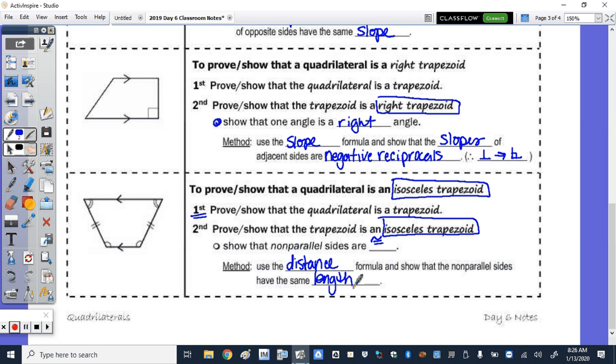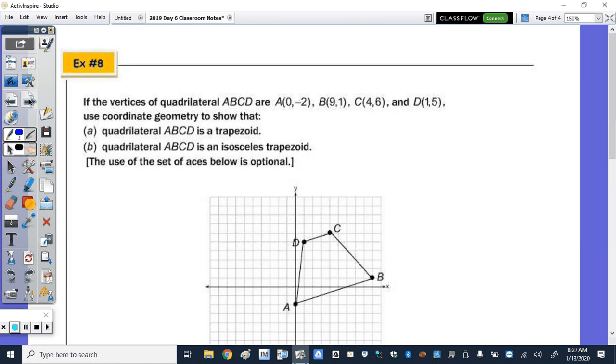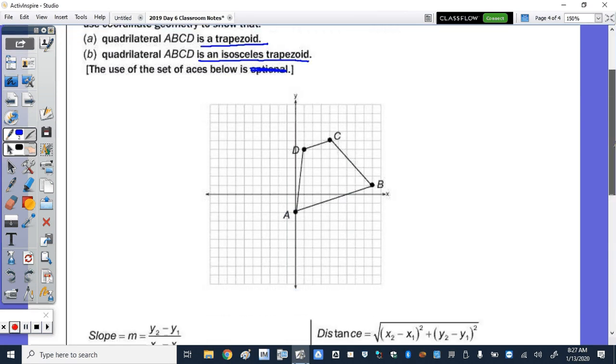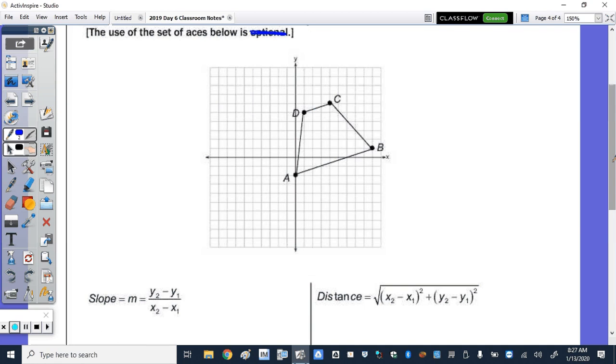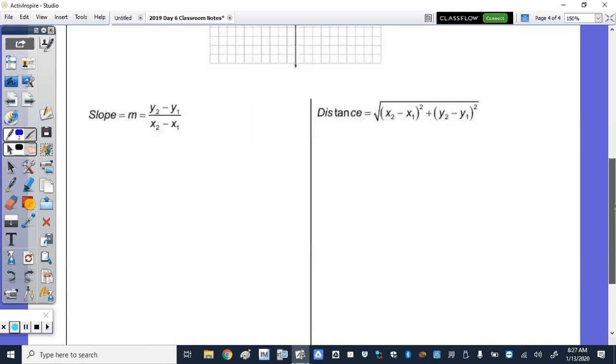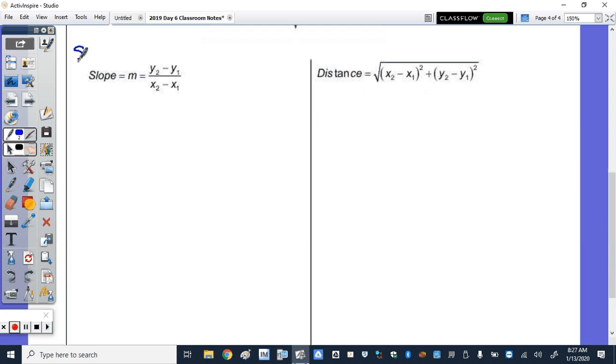So let's do the coordinate geometry proof. So we're given the vertices and we want to show that first it is a trapezoid and then second it's an isosceles trapezoid. And remember, the use of the set of axes is not optional. Graph it so you can see the trapezoid in this case or whatever polygon and you can use the graph to check your math or calculations. So first, we will use slope to show that it is a trapezoid.